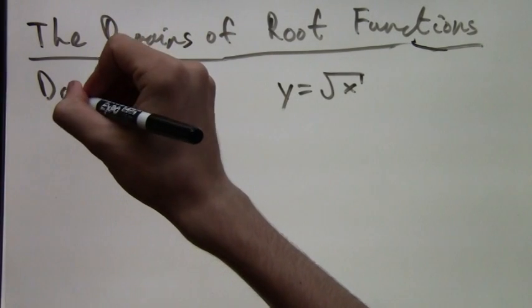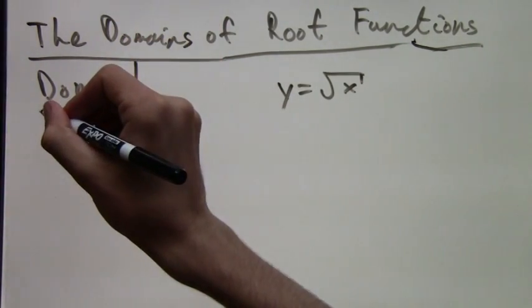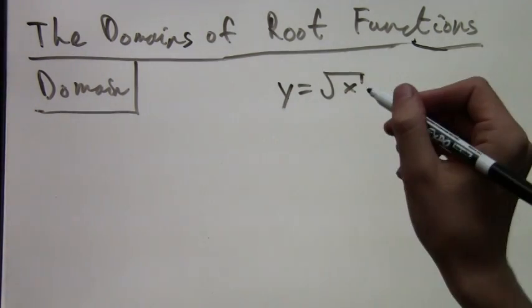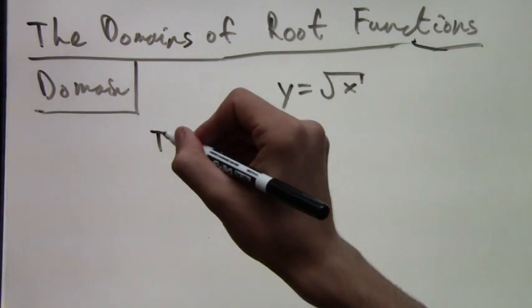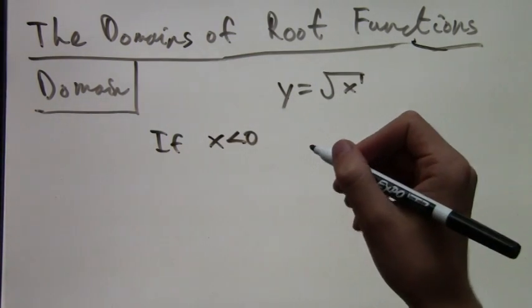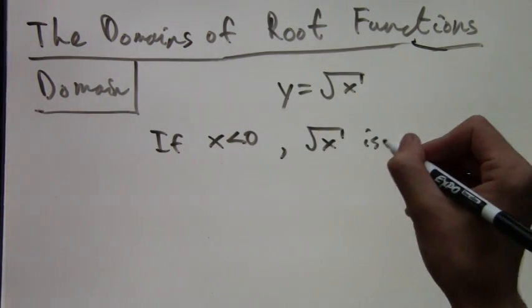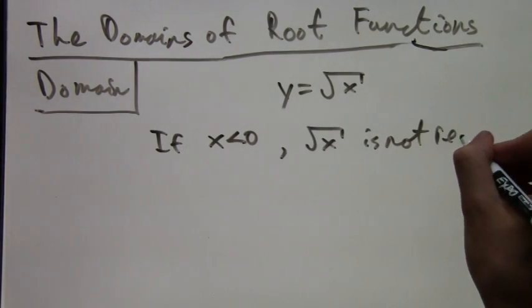Now let's have a brief talk about domain. What do we mean by the word domain? The domain is where the function works. Here we have y equals root x. If x is negative, then the square root of x does not exist; it's not real.